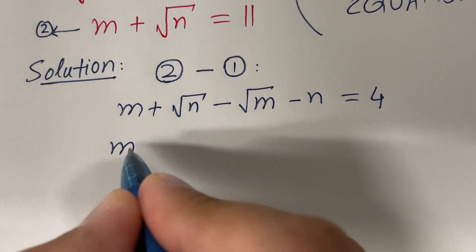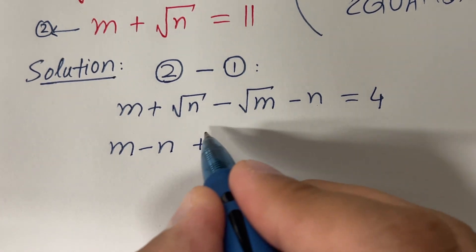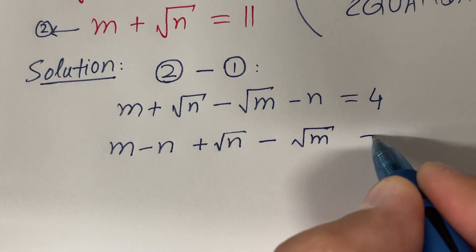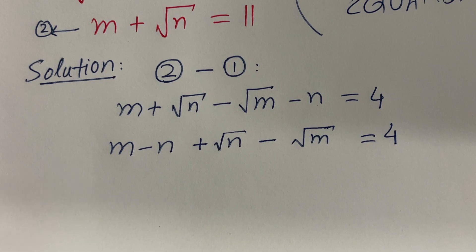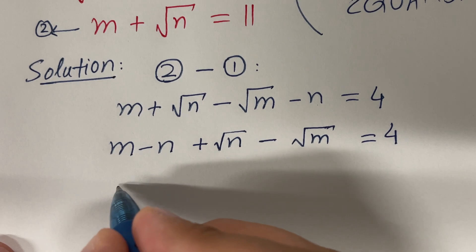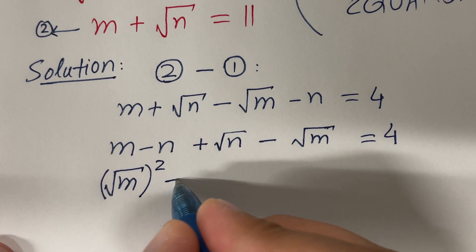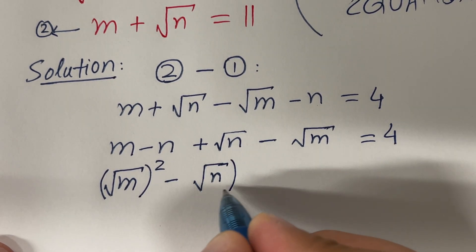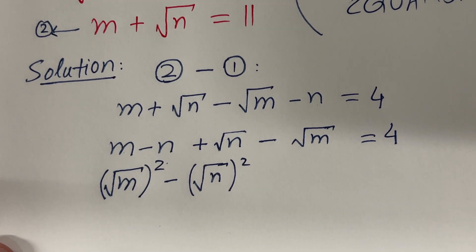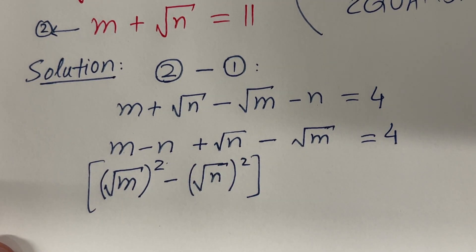Let me write m as it is. Then let me pair m with minus m, and write these two as √n minus √m. The right side is equal to 4. Now in the next step, I want to write m as √(m²) and n as √(n²), because the square roots will cancel and we will get these terms back.